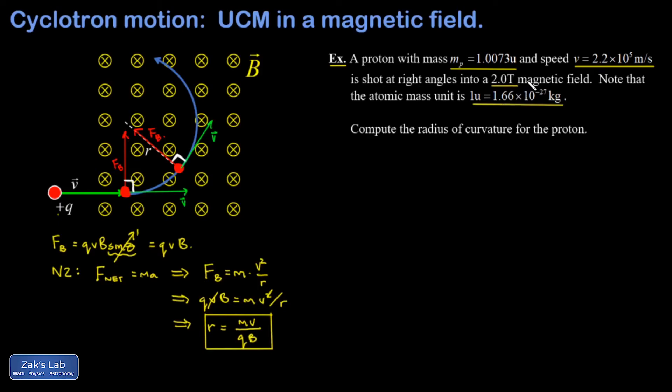Our goal is to get the radius of curvature for this proton. So just as a side note, let's get the mass of the proton in kilograms. 1.0073 atomic mass units